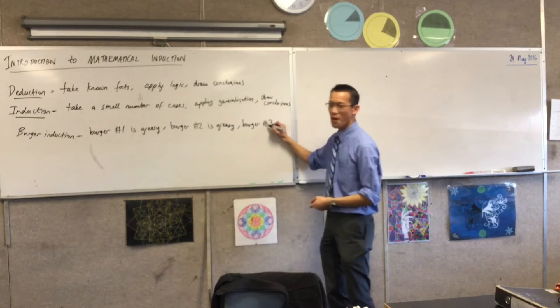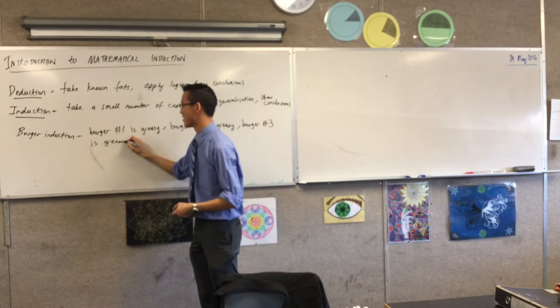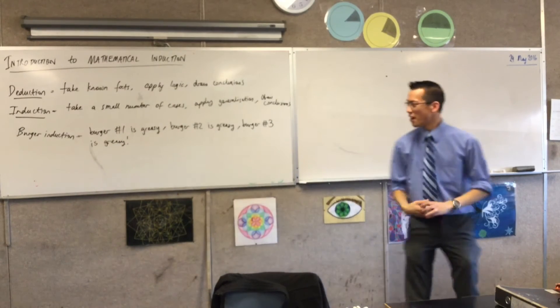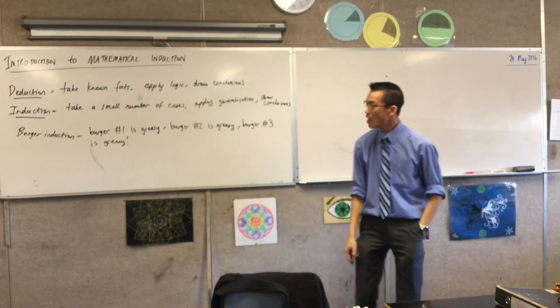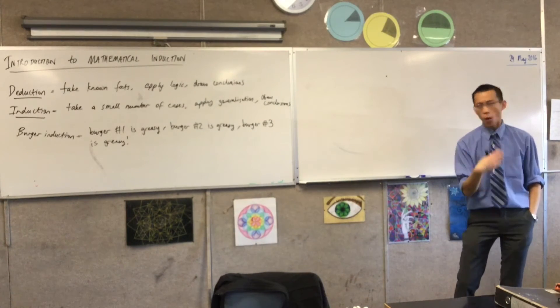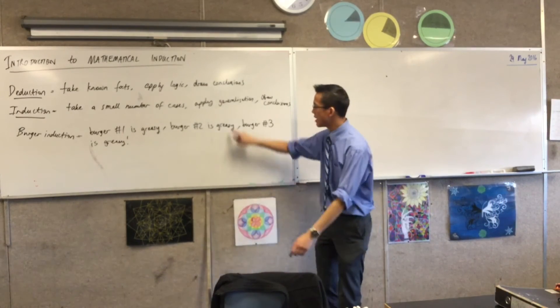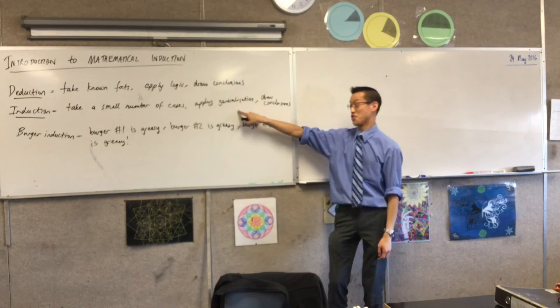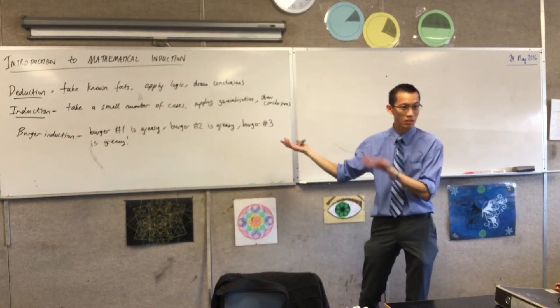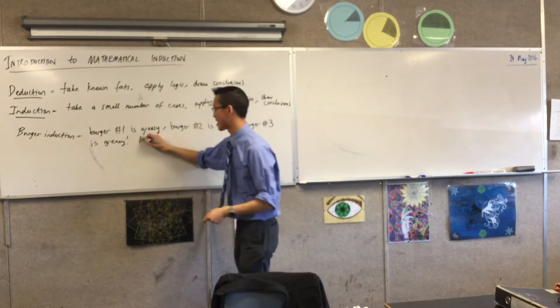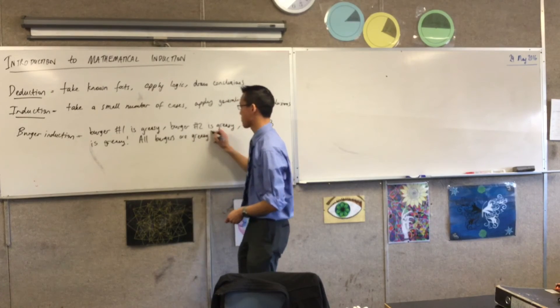So burger two, same kind of pattern. And then because you're a sucker for punishment, you're like, no, 48 other options. What have I got here? I have established a small number of cases—three out of 50. But I think we all agree it is reasonable at this point, even if it's not 100% guaranteed, it is reasonable to apply generalization and say, you know what, I've been sick enough times at this place. What conclusion could I draw from generalizing from this? Yeah, all burgers are greasy here.